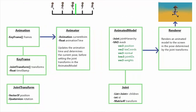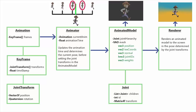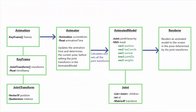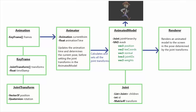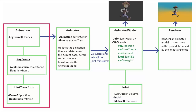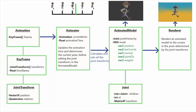So once the animator has calculated the current pose by interpolating between the poses at the two keyframes, it then applies this pose to the joints of the animated model by calculating and setting those joint transforms. So that is pretty much the entire animation system: we have our animated model which we can render in any given pose by setting the joint transforms, we have our animation which is just a list of certain poses at certain times, and we have our animator which runs through an animation, finds what the current pose should be by interpolating between the previous and next keyframes, and applies the pose to the animated model by calculating and setting those all-important joint transforms.